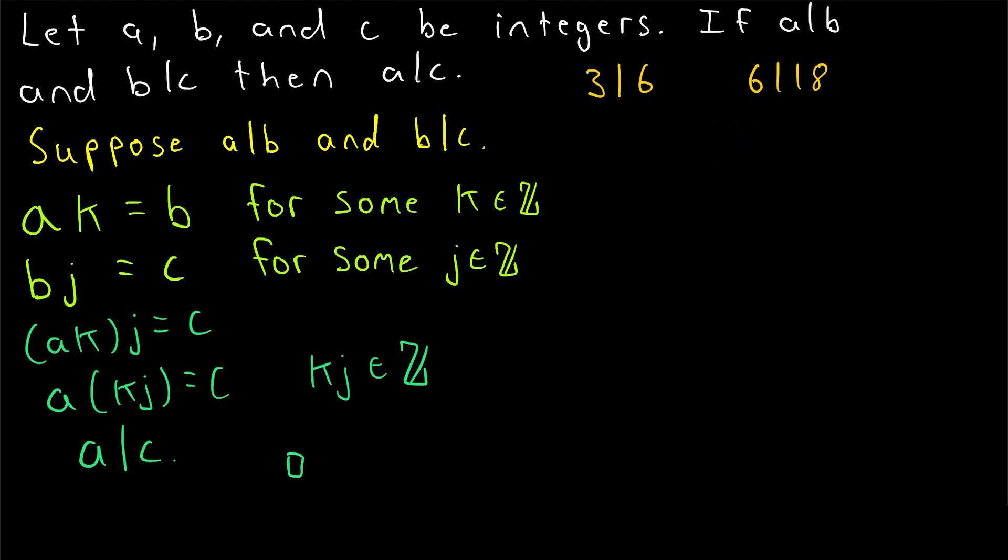But taking this step by step, we see we can multiply three by two in order to get six. We can multiply six by three in order to get 18. In the context of our proof, two is our K integer, and three is our J. Three also happens to be our A value. Six is our B value, and 18 is our C value.